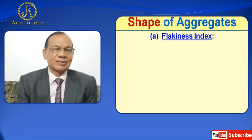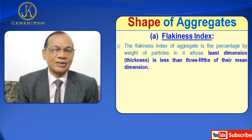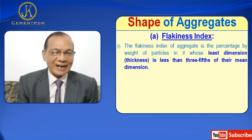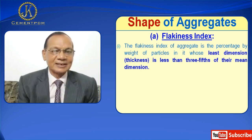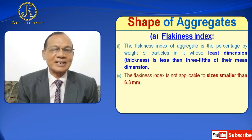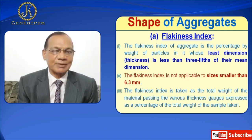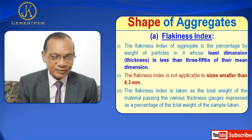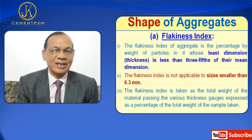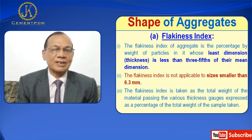Under shape of aggregate we have flakiness index and elongation index. The flakiness index of aggregate is the percentage by weight of particles in it whose least dimension, that is thickness, is less than three-fifths of their mean dimension. The flakiness index is not applicable to sizes smaller than 6.3 mm. It is taken as the total weight of the material passing the various thickness gauges expressed as a percentage of the total weight of the sample.